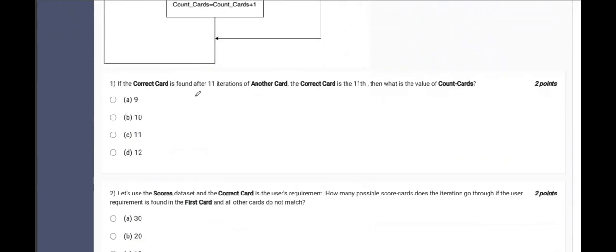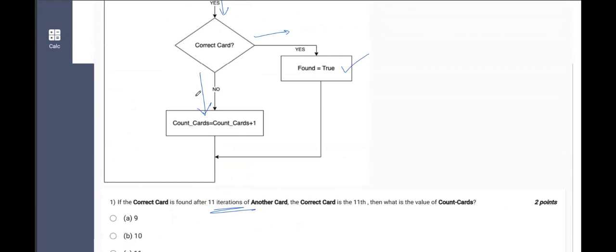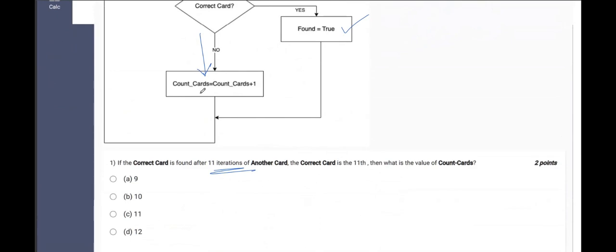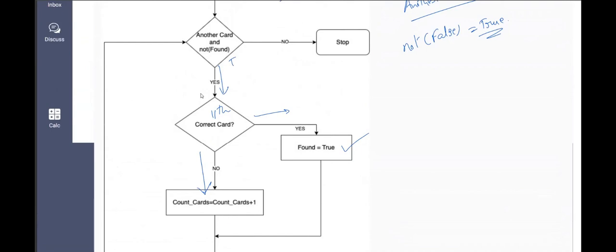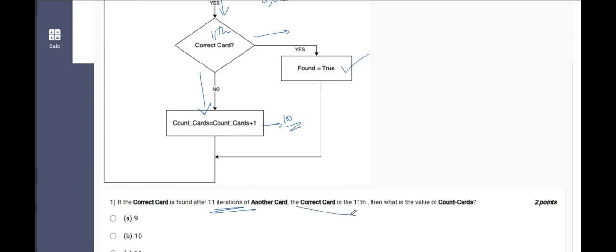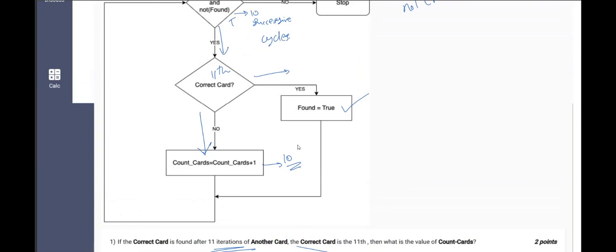So let us find out the first question's answer. If the correct card is found after 11 iterations, 11 iterations of another card, that means the correct card is the 11th. So this is the 11th card. That means this got executed successfully for 10 times. So that means this goes on to be 10. As the 11th card is the correct card here, then what is the value of count_cards? 0 initially, 0 plus 1 for the first card, 2 for the second card, 3, 4, 5, 6, 7, 8, 9, 10. As there are 10 cards and the 11th card being correct, the value will be 10.